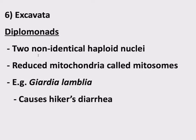There's another more bizarre thing about diplomonads: they have reduced mitochondria. If you remember, mitochondria were one of those basic fundamental things that all eukaryotes have. These organisms don't have them — it's not that these are the most ancient, most basal eukaryotes. They've reduced the function of their mitochondria and essentially lost most of this organelle. This is not unlike birds that have lost the ability to fly, like penguins. They have reduced mitochondria called mitosomes. A notable member of diplomonads is Giardia lamblia.